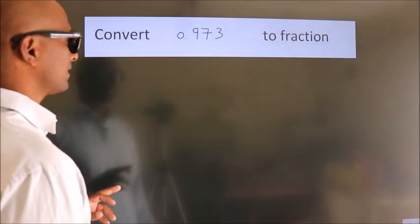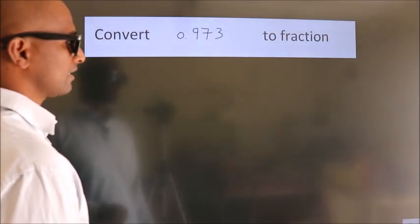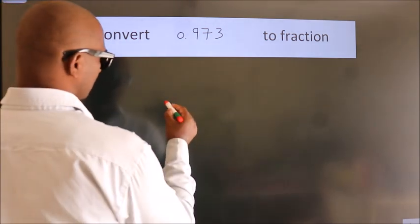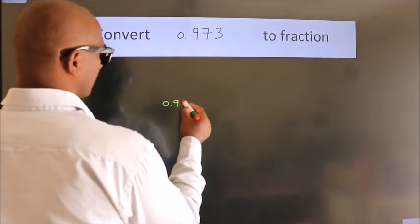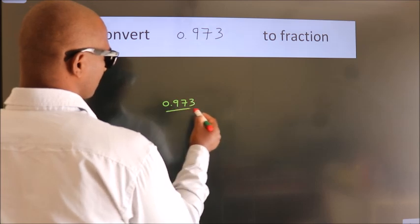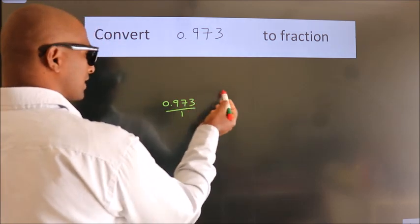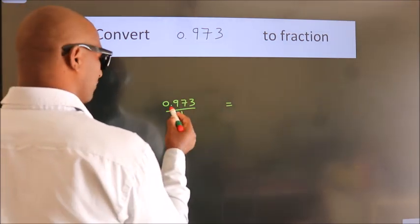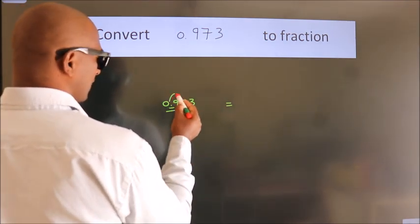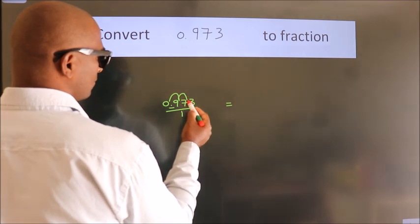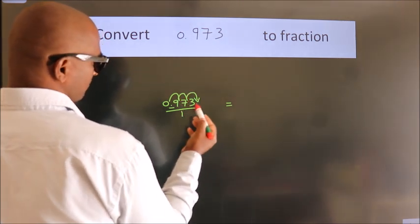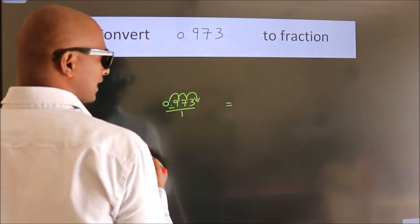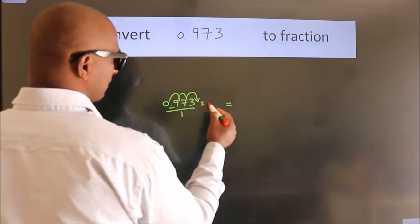Convert 0.973 to a fraction. Given is 0.973. To convert this to a fraction, we have to move this decimal after 1, 2, 3 numbers. To move this decimal after 3 numbers, we have to multiply it with 1000.